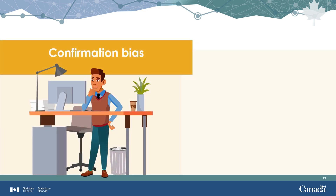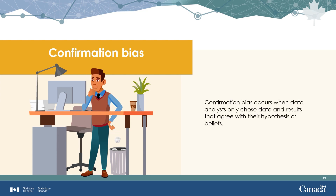If analysis is conducted to support a specific point of view or narrative, it may be biased, meaning it could ignore or exclude important elements that do not fit that point of view. Confirmation bias occurs when data analysts only choose data and results that agree with their hypothesis or beliefs.